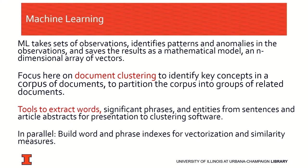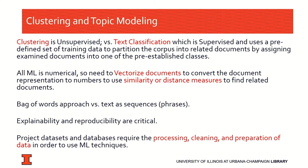Our focus is on document clustering. We want to identify key concepts from a corpus of documents and devise a way to partition the corpus into groups of related documents. We've developed some tools to extract words and phrases and build systems that can be presented to the clustering software. Clustering is unsupervised machine learning, versus text classification which is supervised. Supervised learning uses a predefined set of training data where you've already pre-assigned documents into one of the pre-established classes. All machine learning is numerical, so vectorization is done on everything.